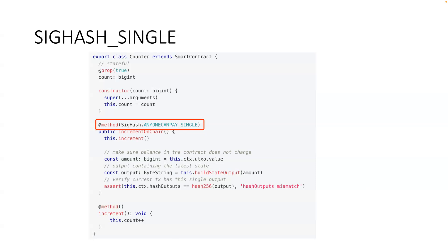In my understanding, since the contract is going to be called and maintain state, by using ANYONE_CAN_PAY the state will be maintained, and whenever the last person calls it, it will make the transaction valid and update the state to give the latest count. That's one possibility — actually a good reason. That's one of the big reasons.